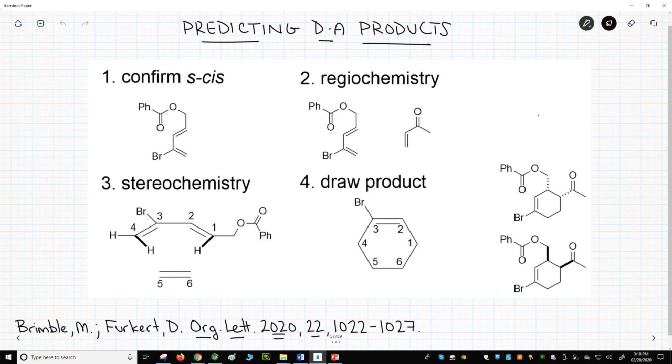Step 1: Make sure that the diene can adopt an S-cis conformation. This diene is already drawn S-cis, so we're good.